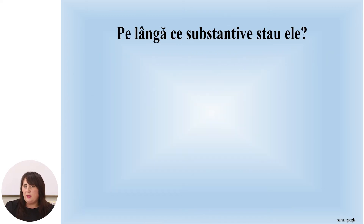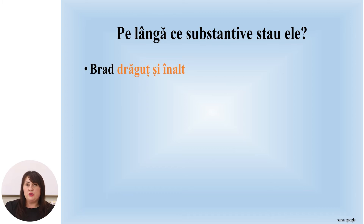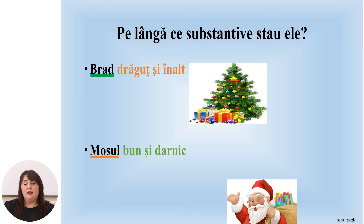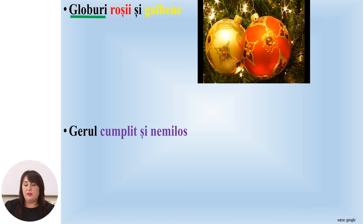Spuniți-vă rog, dar pe lângă ce substantive stau aceste cuvinte însușiri? Cuvintele însușiri drăguț și înalt stau pe lângă substantivul brad. Cuvintele însușiri bun și darnic stau pe lângă substantivul moșul. Iar cuvintele însușiri roșii și galbene stau pe lângă substantivul globuri. Și cuvintele însușiri cumplit și nemilos stau pe lângă substantivul gerului.